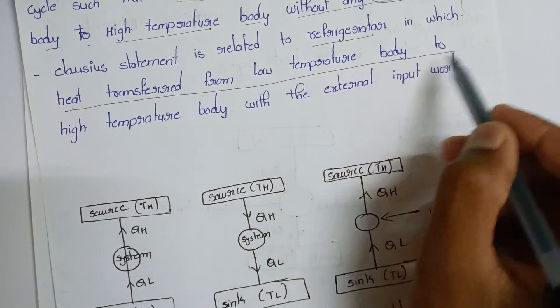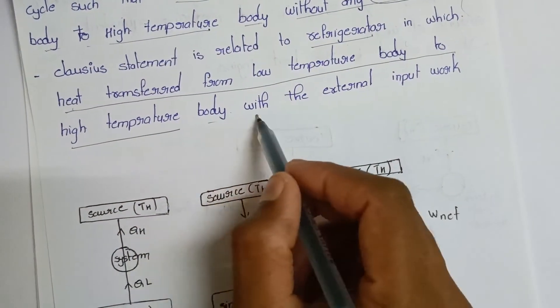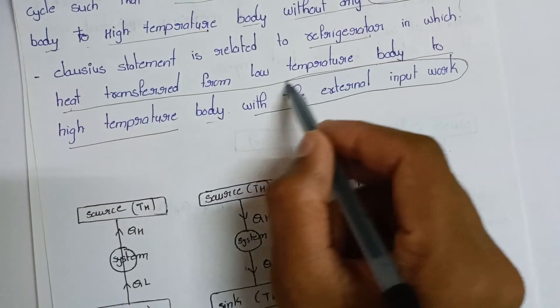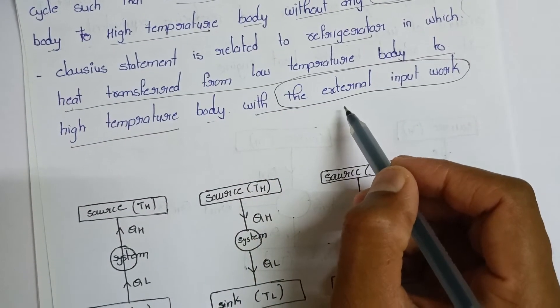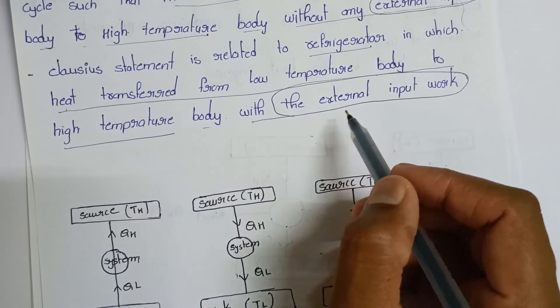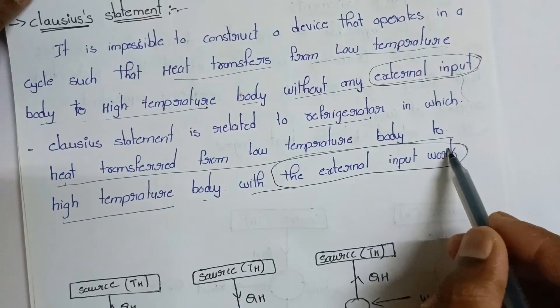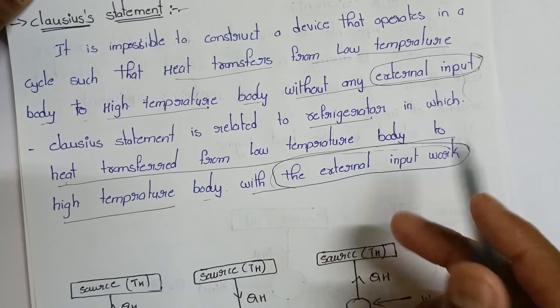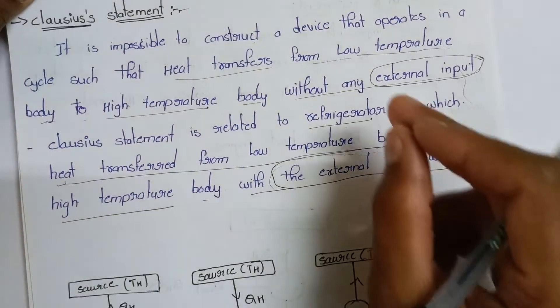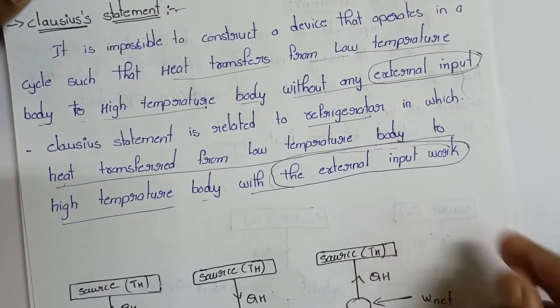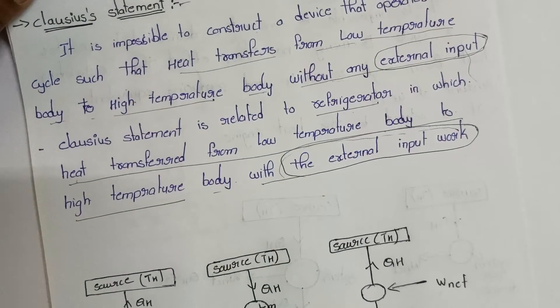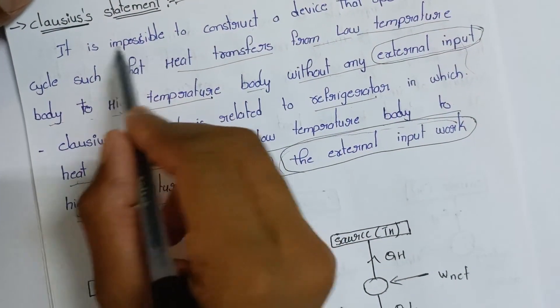With external work input, heat transfers from low temperature body to high temperature body. Clausius statement says without external work input, this is impossible. The definition of impossible: